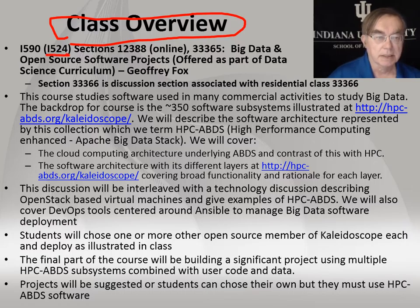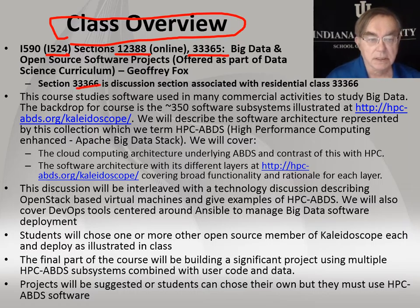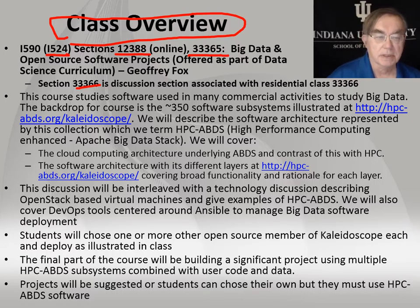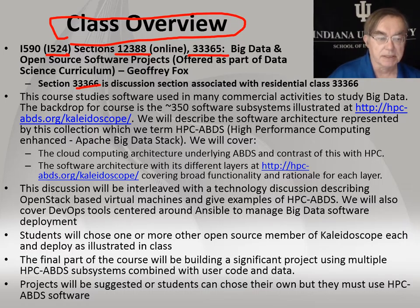This is the class overview. This class is the I-524, although it's called I-590 as a topic course — it's now got its own name. It has two real sections: online section 3365, and residential section 3788. The residential section has a discussion section attached to it, separately listed.